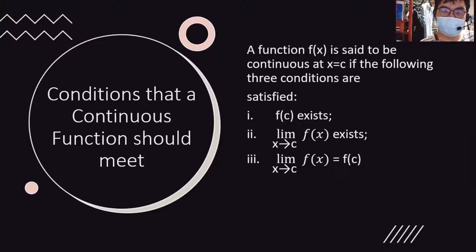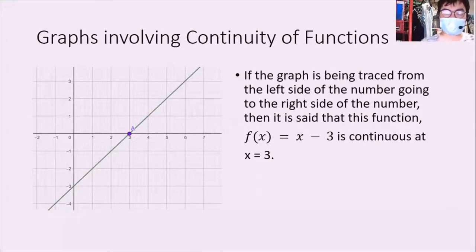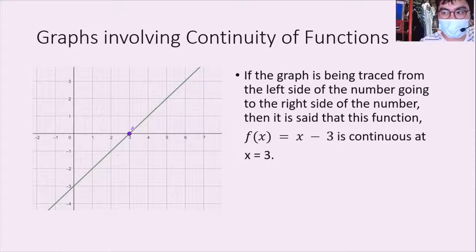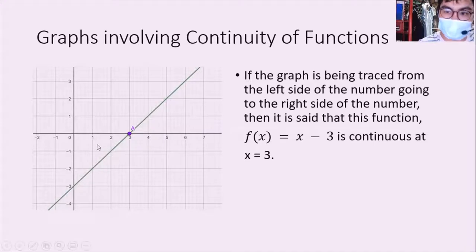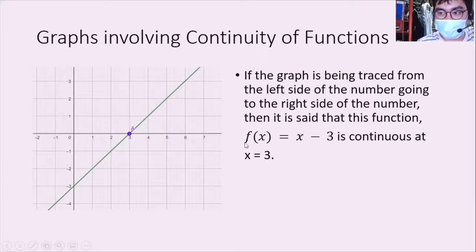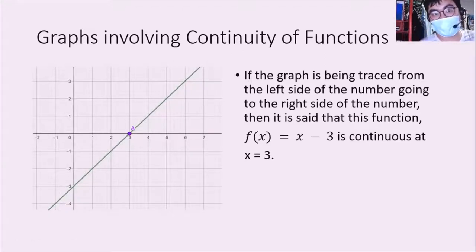Third condition: the limit as x approaches c of f(x) must be equal to f(c). Kailangan maging equal si limit at si function pag ine-evaluate. Pag sinabing continuous, nag-exist talaga ang function na yun at a certain value. Looking at the graphs, if the graph is being traced from the left side going to the right side of the number, then it is said that the function f(x) = x - 3 is continuous at x = 3.